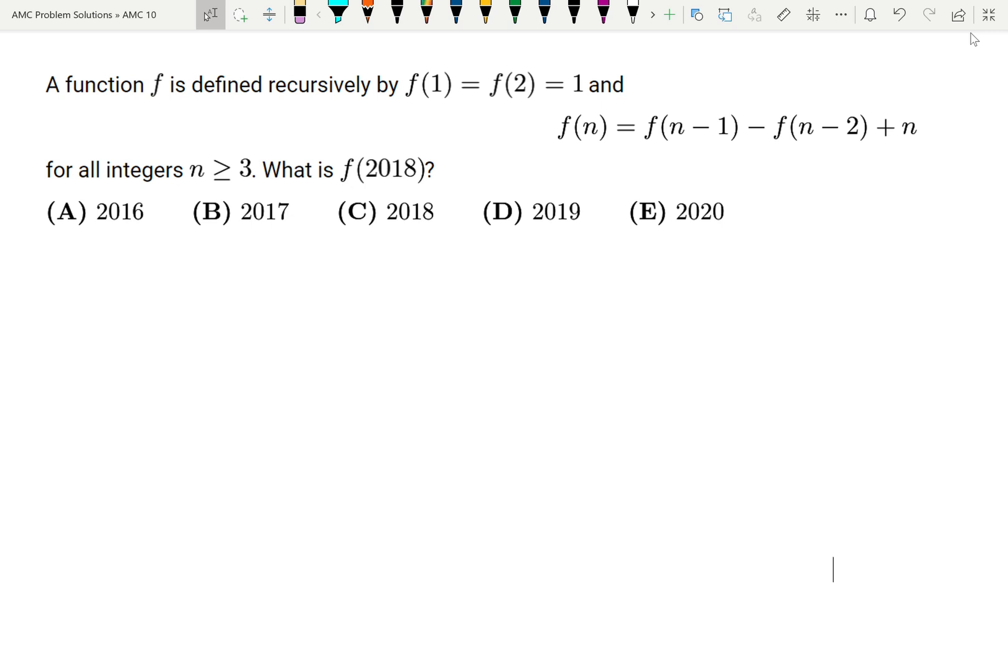A function f is defined recursively by f(1) = f(2) = 1, and f(n) = f(n-1) - f(n-2) + n for all integers n greater than or equal to 3. What is f(2018)?